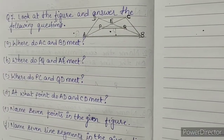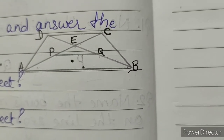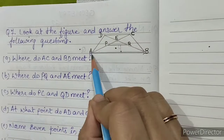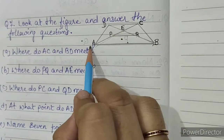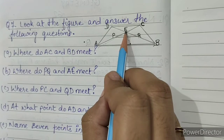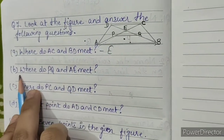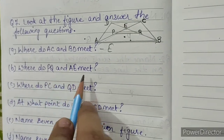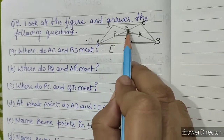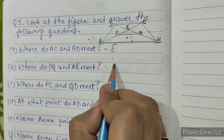Question number 7: look at the figure and answer the following questions. A: where do AC and BD meet? AC and BD both meet at point E. So our answer is E. B: where do PQ and AE meet? PQ and AE both meet at point P. So our answer is P.